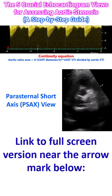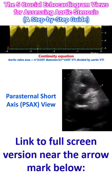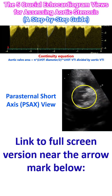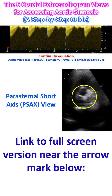The parasternal short axis view, often called the Mercedes-Benz view, provides a cross-sectional look at the valve. The name comes from the appearance of the closed aortic valve in cross-section, though it is upside down. This is the best view to identify the number of cusps, e.g. bicuspid vs. tricuspid and occasionally quadricuspid. In some patients with excellent image quality, you can perform 2D planimetry to manually trace the aortic valve orifice area, though the Doppler method remains the primary standard.